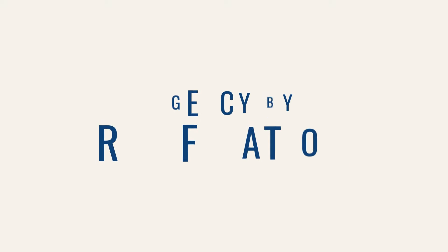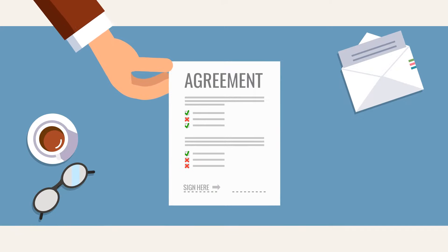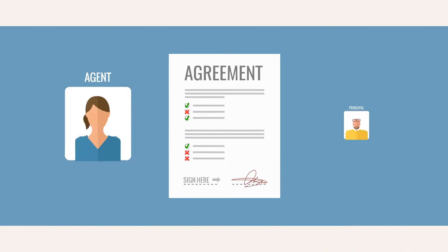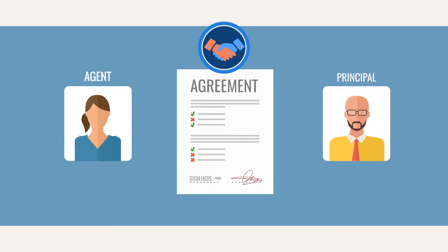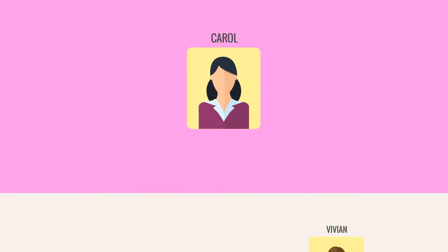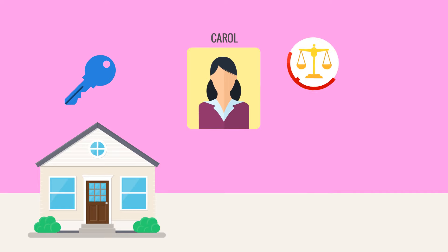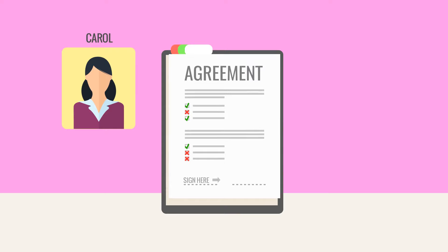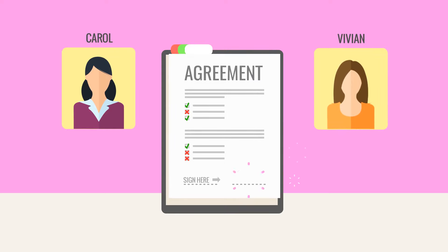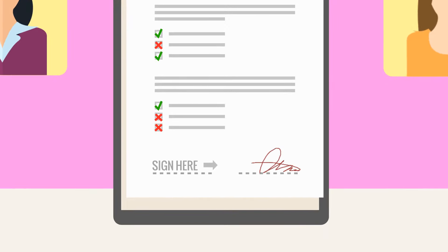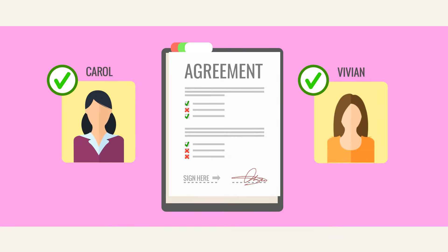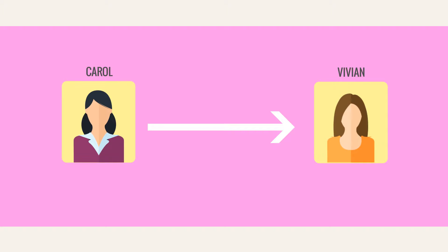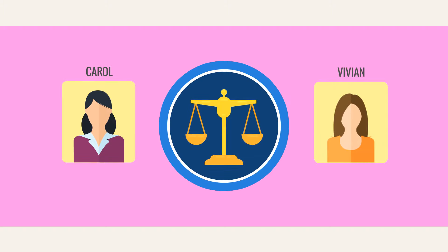Agency by Ratification happens when someone has no authority to perform an action and does it anyway, and the principal later adopts the act. With agency by Ratification, an agency relationship is created retroactively by accepting the circumstances that created the agency after the fact. Suppose Carol is a real estate agent who knows Vivian is trying to sell her home. Carol negotiates a deal for Vivian's house without authorization, without ever speaking to Vivian about it. One day, Carol arrives with a completed contract — all Vivian has to do is accept the deal and sign the paperwork and her house is sold. If Vivian accepts the deal and signs, she has effectively ratified what Carol has been doing and probably created an agency by Ratification. Carol wants a fee for her services and she may have to sue Vivian to collect, and it is ultimately up to the courts to determine if there is an agency relationship or not.